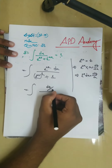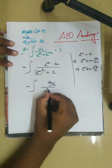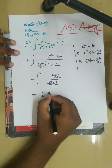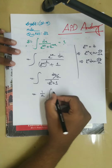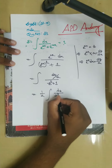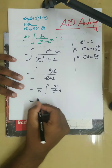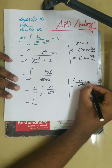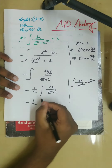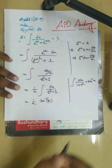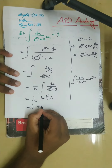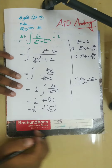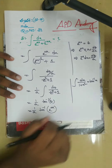So we get dz divided by a, and the integral becomes 1 by a times dz divided by z squared plus 1. This formula applies: integration of dx divided by 1 plus x squared equals tan inverse x. So our answer is 1 by a times tan inverse of e to the power x.